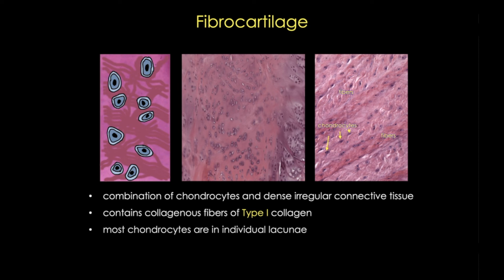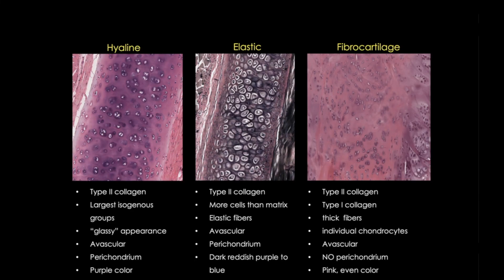Be sure to look for those chondrocytes — if you see them, you'll know that you're looking at fibrocartilage and not dense irregular connective tissue. And finally, the lack of a perichondrium, that outer dense layer of connective tissue that's essential for cartilage growth, also identifies this tissue as fibrocartilage.